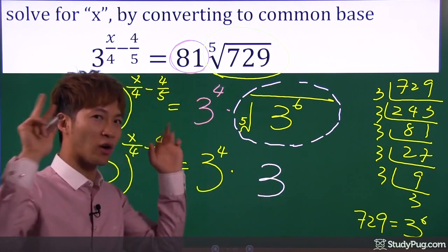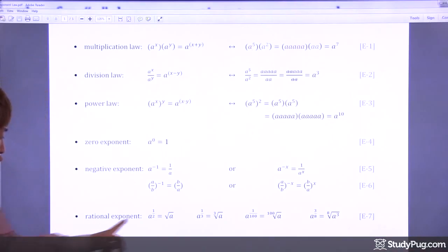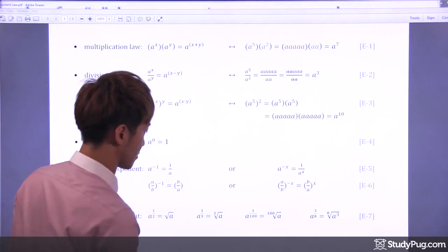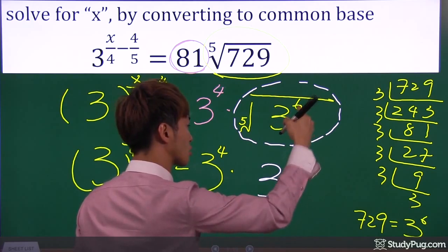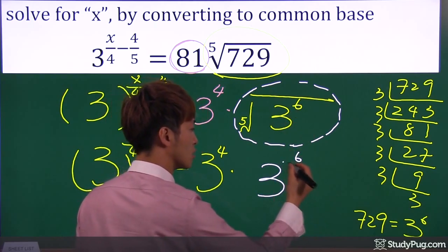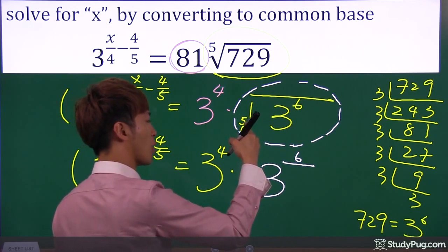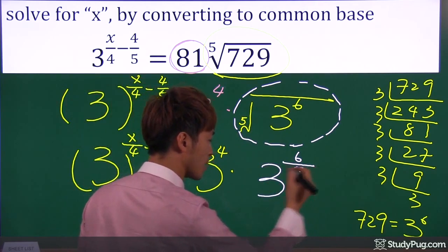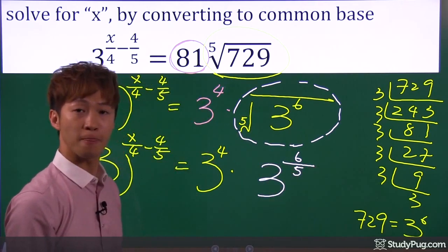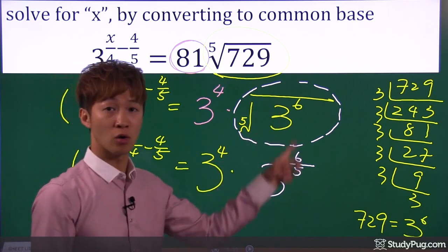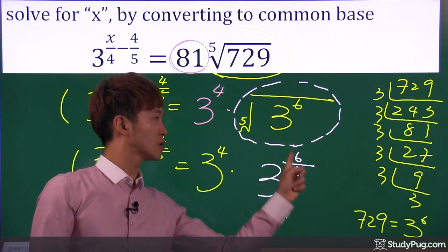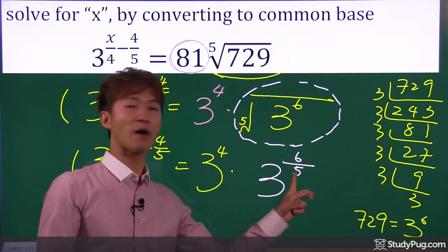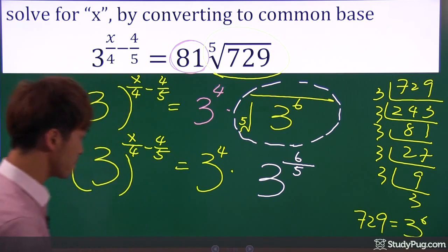The rational exponent rule tells us that this, we can write it as six on top. Six stays on top at the exponent, divided by five on the bottom. So five goes to the bottom at the denominator, according to the rational exponent rule. Look, six on top, divided by five on the bottom.